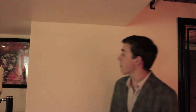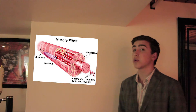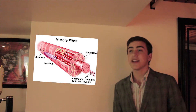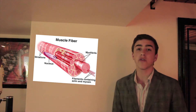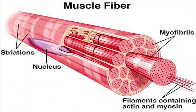Muscles are made up of fibers. Muscle fibers, as you see here, are single multinucleated cells which are covered in connective tissue to cover and support the muscles. Muscle fibers themselves consist of thread-like structures called myofibril. Myofibril is made up of two proteins called myosin and actin.